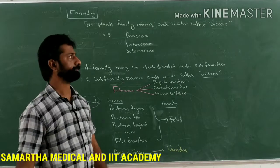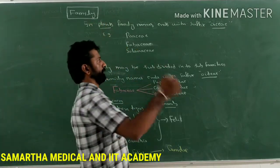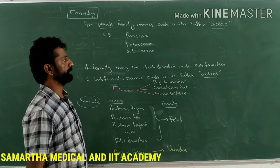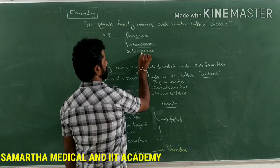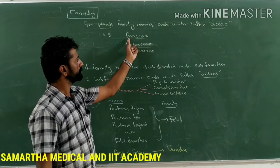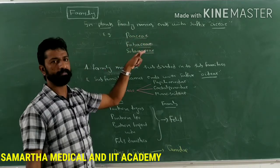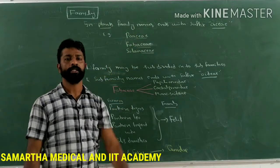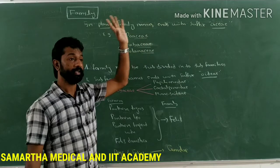Among the families of plants, the family names end with the suffix -aceae. For example, Poaceae, Fabaceae, Solanaceae — the common suffix among all these is -aceae. Always remember that plant family names end with the suffix -aceae, which is very important for the NEET and CET examination.